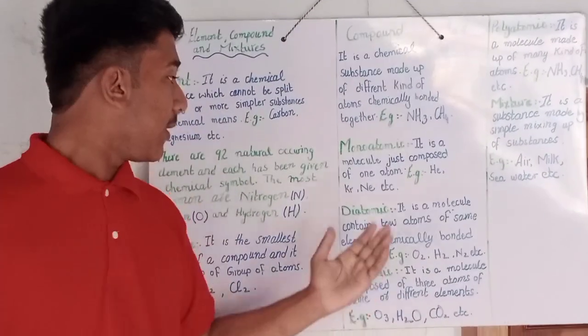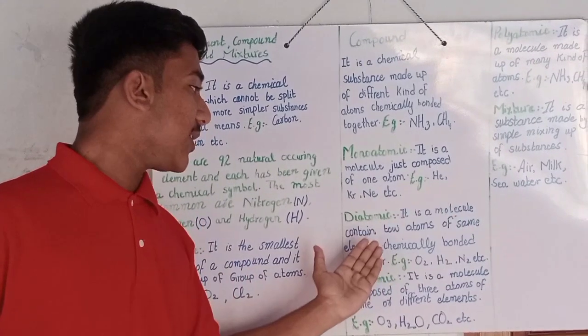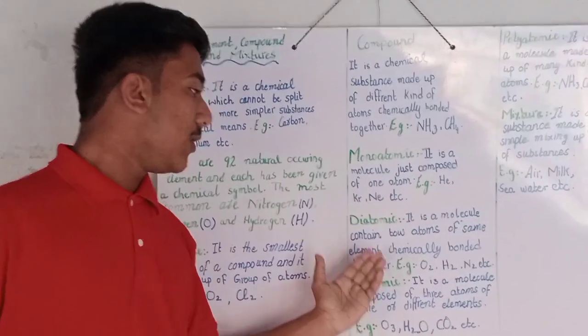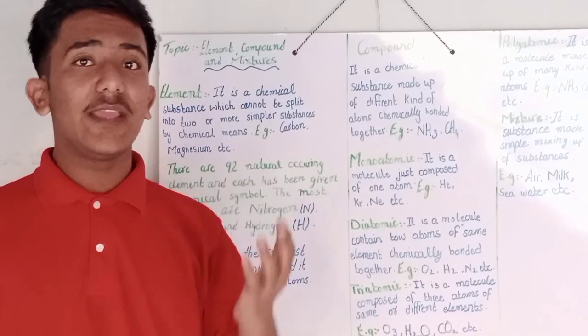Diatomic. Diatomic, it is a molecule containing two atoms of same elements chemically bonded together. For example, O2, H2, N2, Cl2, and etc.